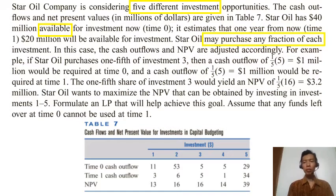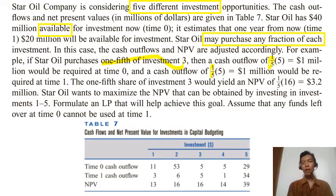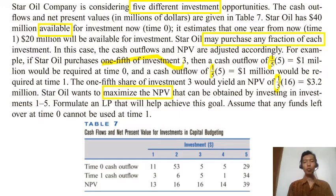Star Oil Company may purchase any fraction of each investment. For example, if you purchase one fifth of investment three, then the cash outflow is multiplied by one over five at time zero, and the cash outflow at time one is also multiplied by one over five, and then the NPV is also multiplied by one over five. The objective of this problem is that Star Oil wants to maximize the NPV that can be obtained from all five investments. I suggest you pause the video and read the problem carefully.